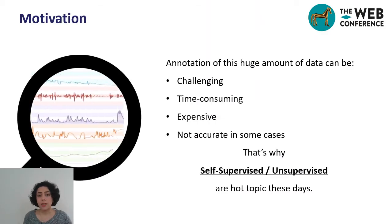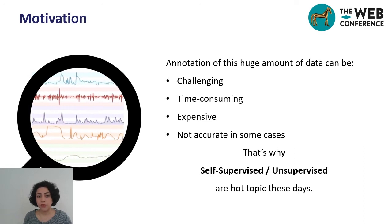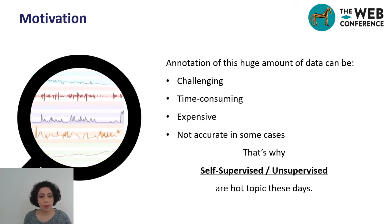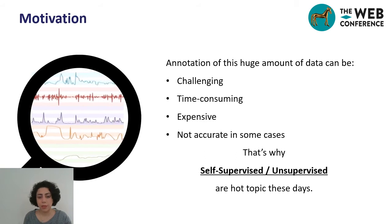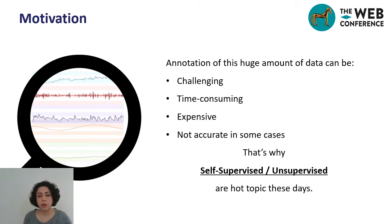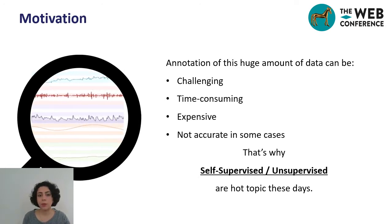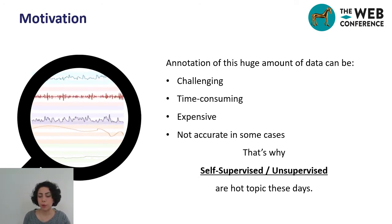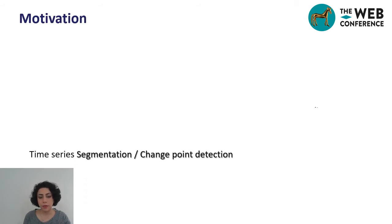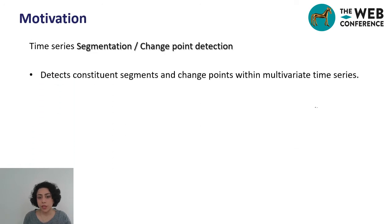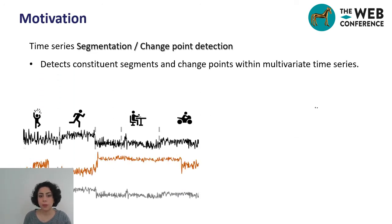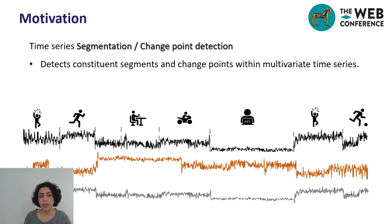But annotation and extracting meaningful segments from this huge amount of data is challenging, expensive and sometimes infeasible. That's why self-supervised and unsupervised methods are a hot topic these days. Changepoint detections will help us to extract meaningful parts from unlabeled data and make it ready for further processing. We define a time series changepoint detection technique that looks for changes in properties of the given time series to find the most homogeneous segments that can represent a specific state of the system.